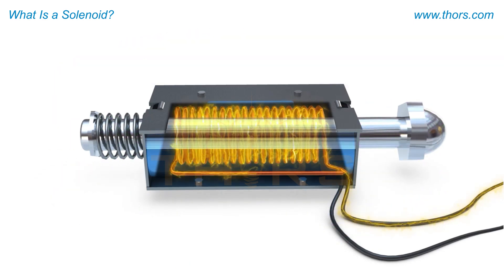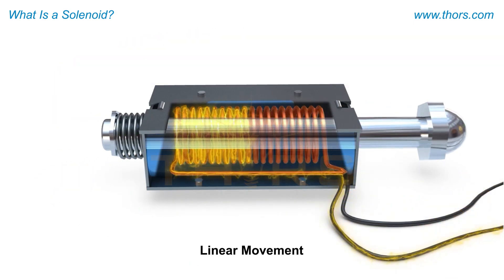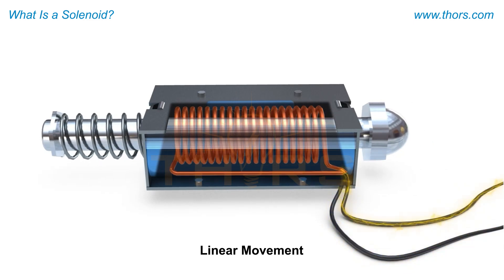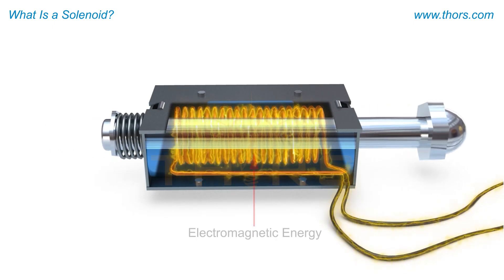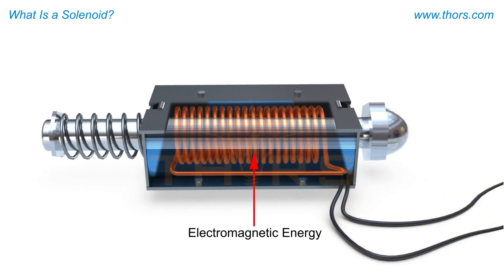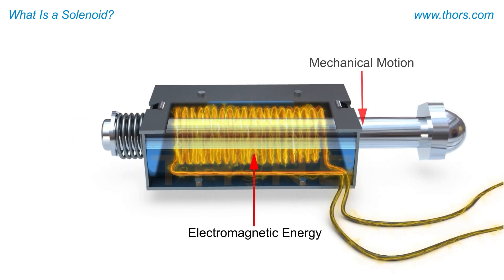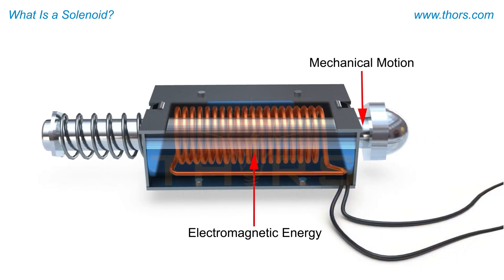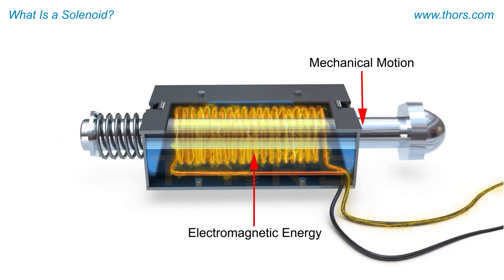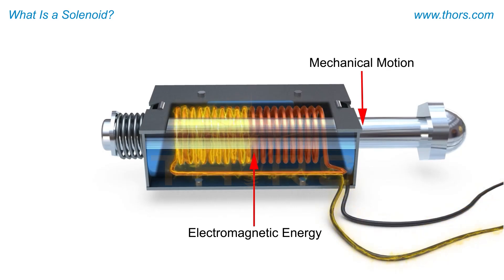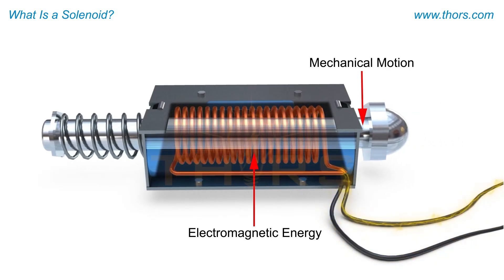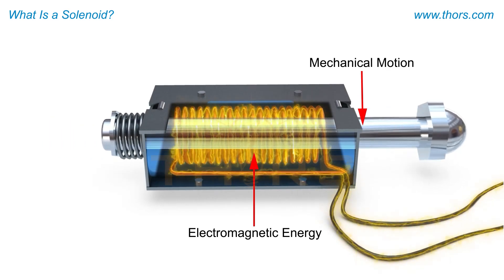The metal plunger moves linearly within the solenoid, converting electromagnetic energy into mechanical motion. This mechanical motion is then transferred to an actuating device.